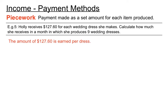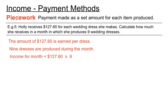So what we do is: the amount of money per dress is $127.60. If she makes 9 of them in that month, all we're doing is multiplying that price per dress by the 9 that she makes. We get an income for the month of $1148.40.